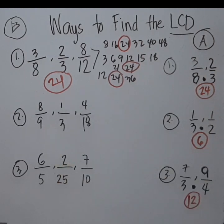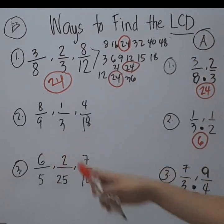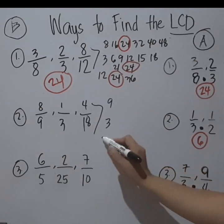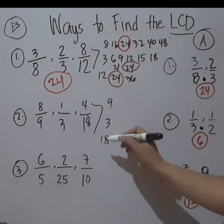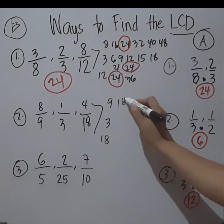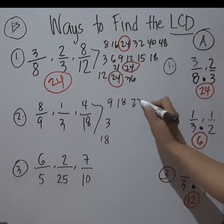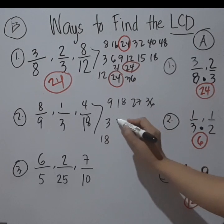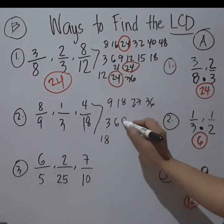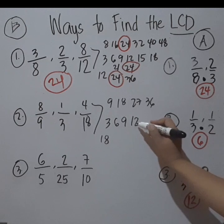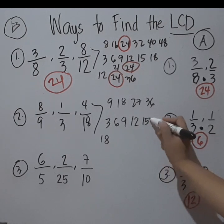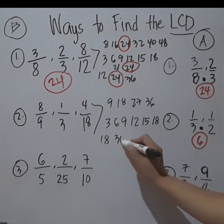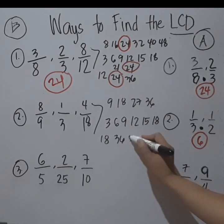Now for number 2, we have 9, 3, and 18 as denominators. Same process: for 9, keep adding — 9 plus 9 is 18, then 27, then 36. For 3, same process: 3 plus 3 is 6, plus 3 is 9, and so on — 12, 15, 18. For 18, 18 plus 18 is 36, plus 18 is 54.